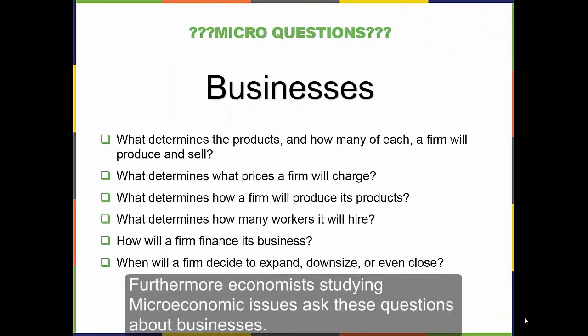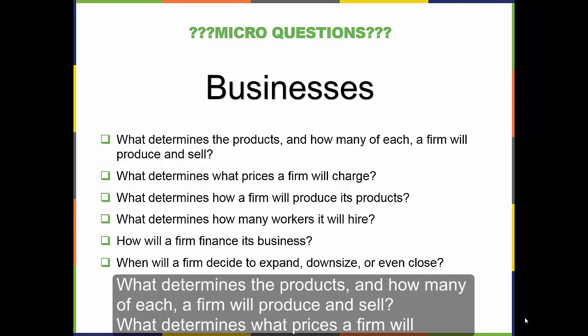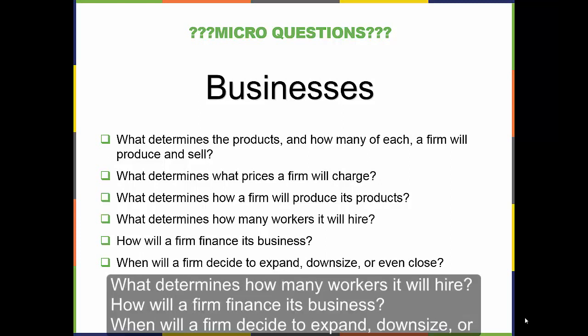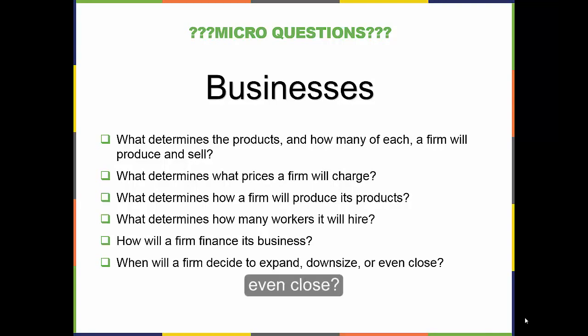Furthermore, economists studying microeconomic issues ask these questions about businesses: What determines the products, and how many of each a firm will produce and sell? What determines what prices a firm will charge? What determines how a firm will produce its products? What determines how many workers it will hire? How will a firm finance its business? When will a firm decide to expand, downsize, or even close?